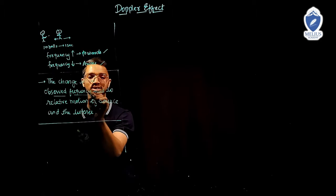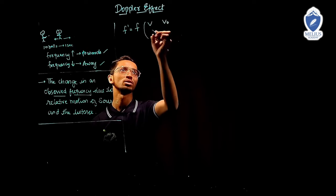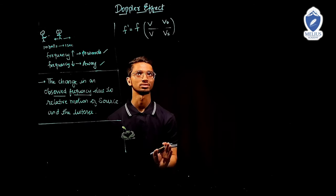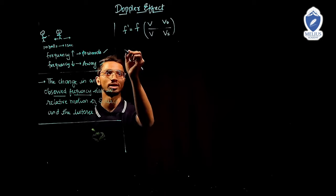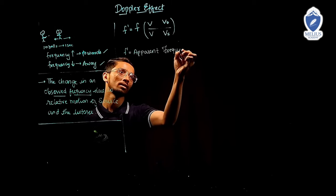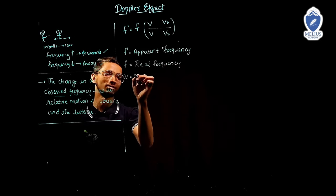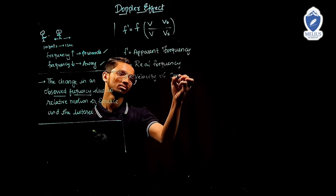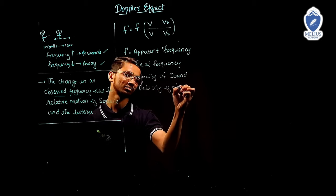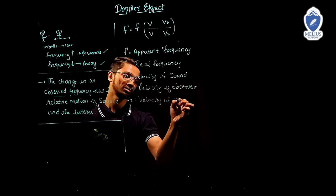What is changing here? The frequency is changing. So F' (F dash) is the apparent frequency. The formula for this is F' = F × (V ± V_O) / (V ± V_S). F' is the apparent frequency, F is the real frequency, V is the velocity of sound, V_O is the velocity of observer, and V_S is the velocity of source.